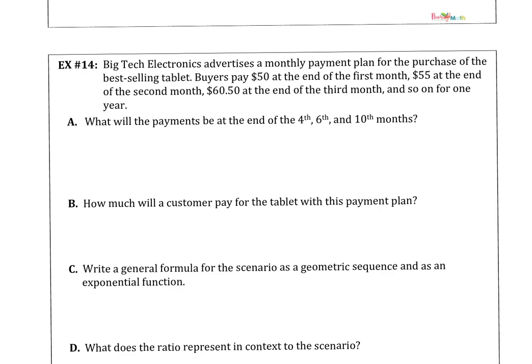So thinking that through, we got 1, 2, 3. 1 was 50, 2 was 55, 3 was 60 and a half. So our rate is 1.1.